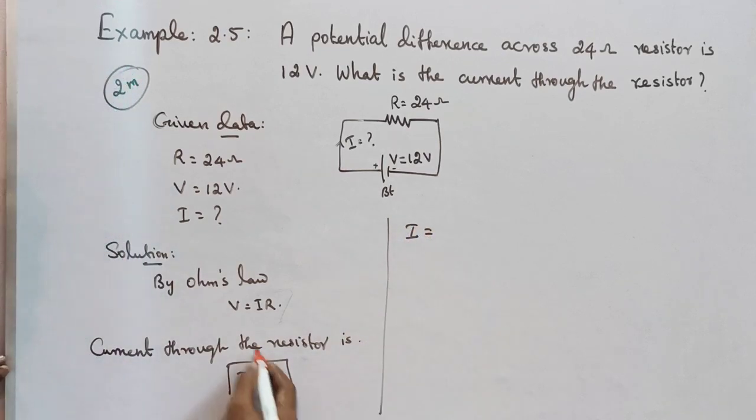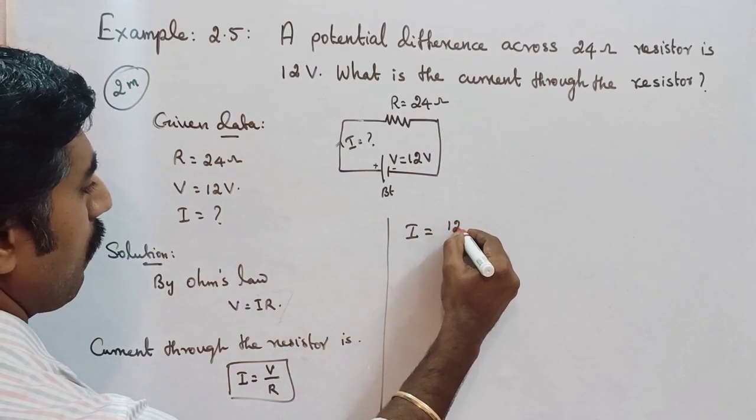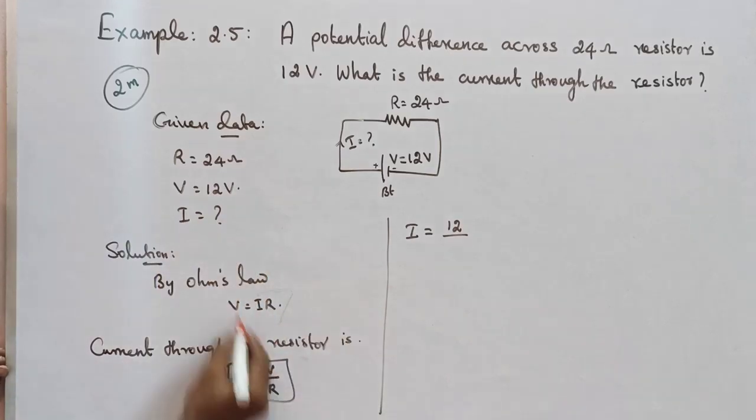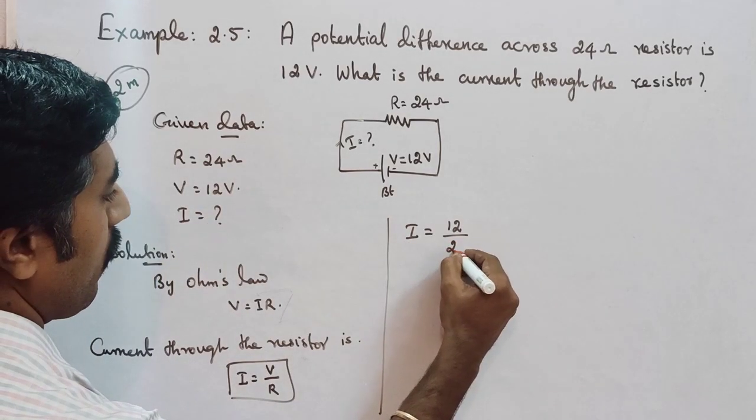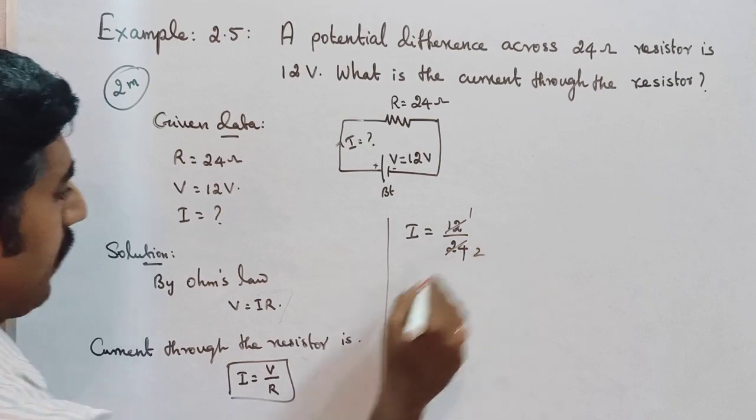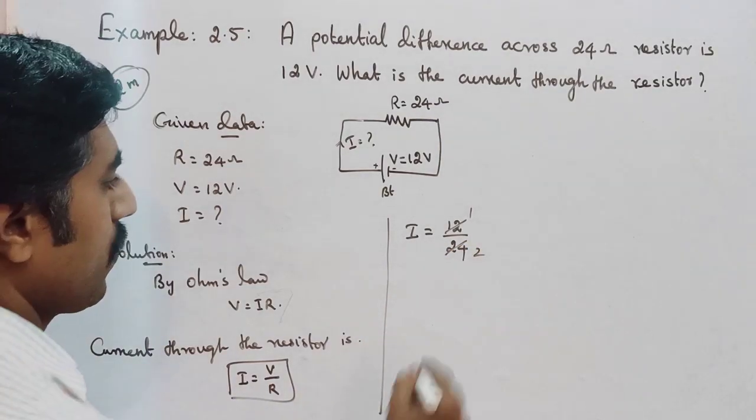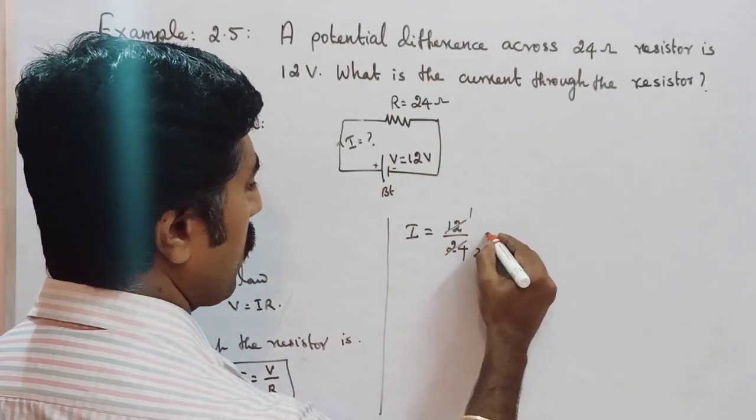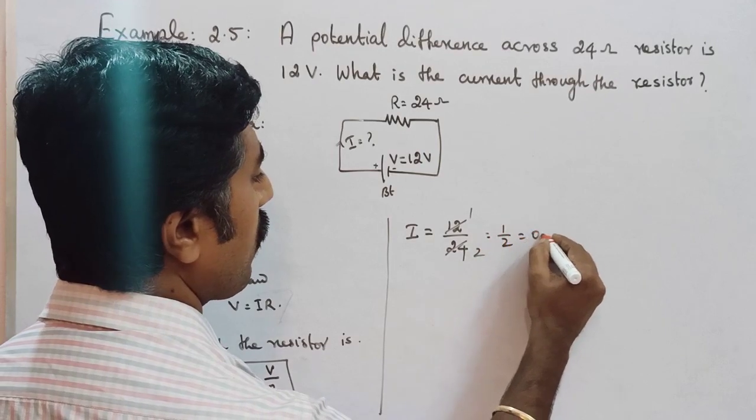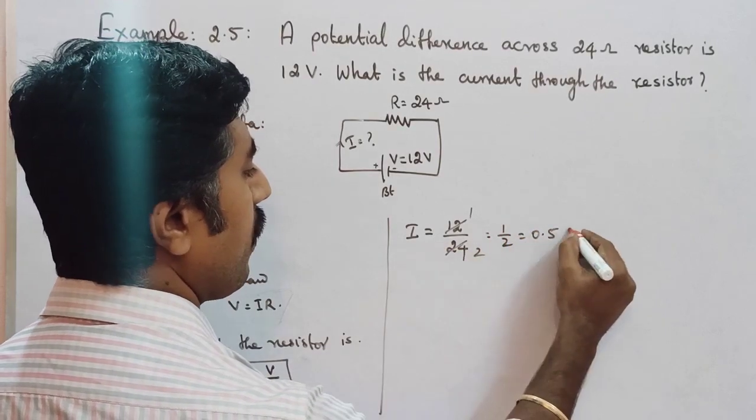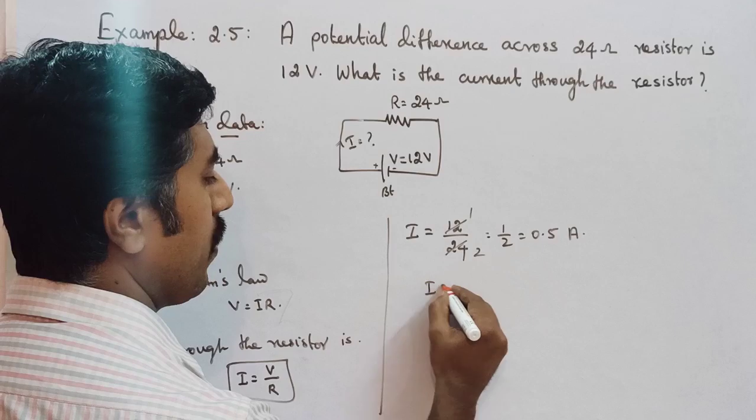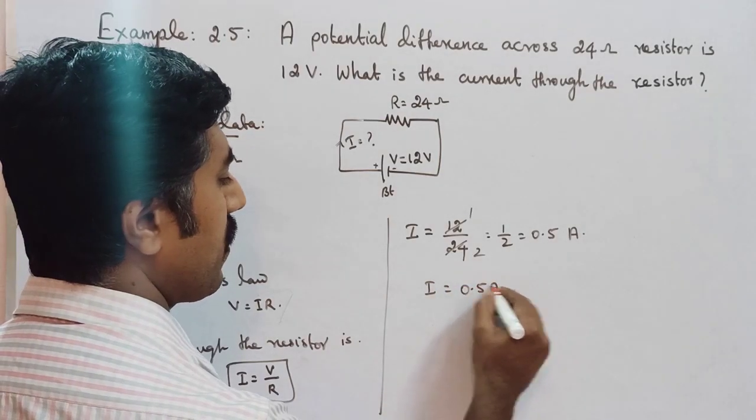V value is 12 volt divided by R value is 24. So 12 divided by 24, that is 1 by 2 is equal to 0.5. The unit of electric current is Ampere, named after the scientist Ampere.